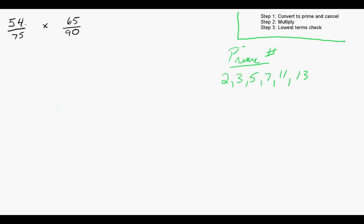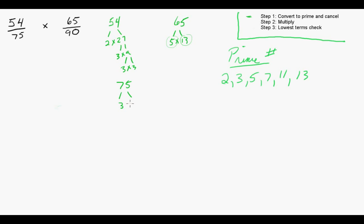Let's take a look at one more example. Here we have 54 over 75 times 65 over 90. Step 1 is converting the numbers to prime. 54 converts to 2 times 27, which converts to 3 times 9, which converts to 3 times 3. 65 is a rather unique number — its only prime factors are 5 and 13. 75 converts to 3 times 25, and 25 converts to 5 times 5. 90 converts to 2 times 45, which converts to 5 times 9, which converts to 3 times 3.